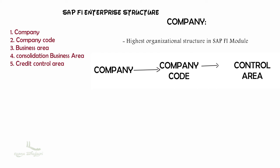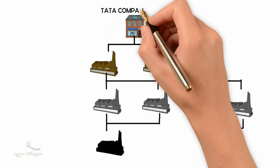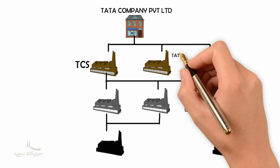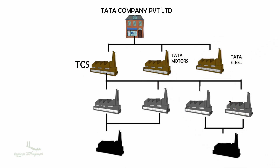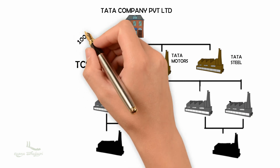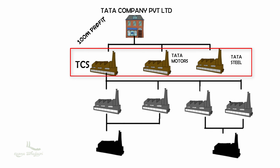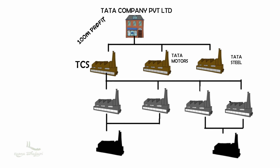Let me give you an example. Tata Company Private Limited can be an example of the Company organizational unit. Under Tata Company, it has subsidiaries TCS, Tata Motors, and Tata Steel. Tata Company represents the group of companies under it, and when they publish a 100 million dollar profit, it is a combination of profit from all its subsidiaries — TCS, Tata Motors, and Tata Steel. To summarize, Company represents the group of companies under it, and we use it to generate the financial statements of the several company codes under it.